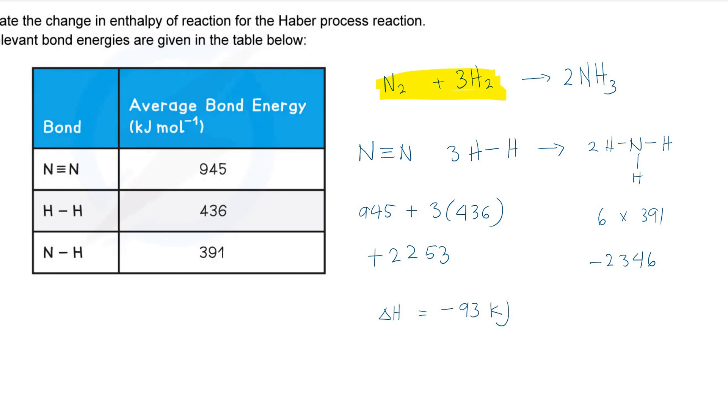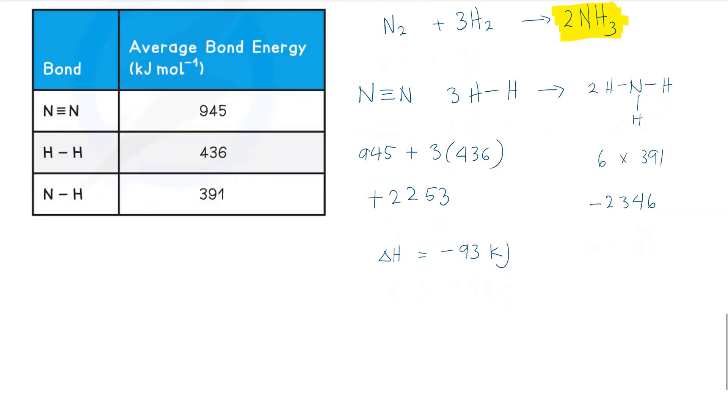Look at the balanced reaction again. Negative 93 kilojoules is released when two moles of ammonia is produced. Now, if you are asked for the enthalpy of formation of ammonia...